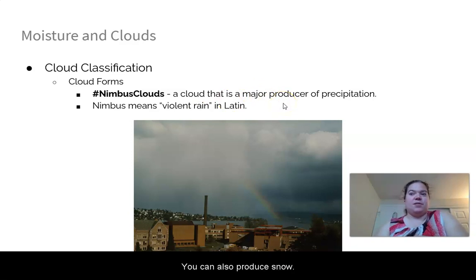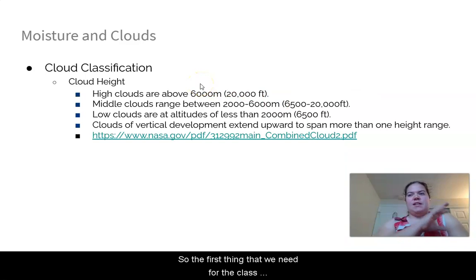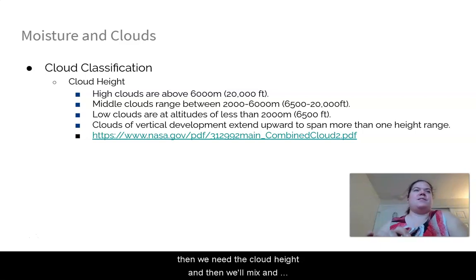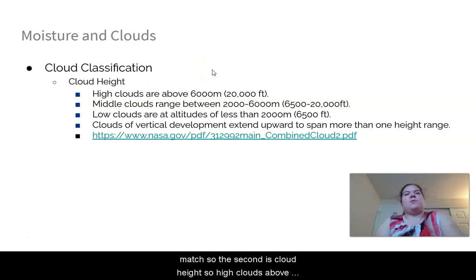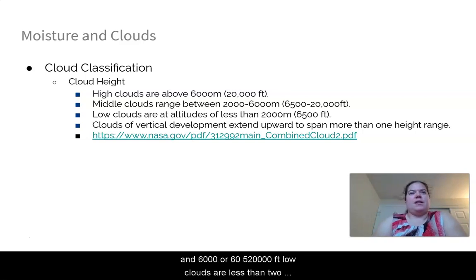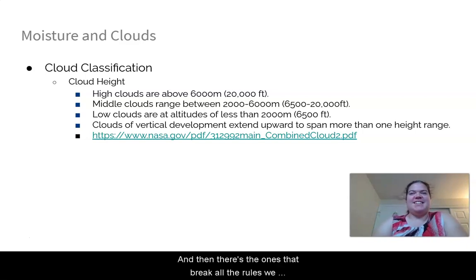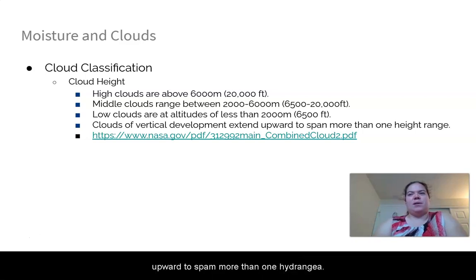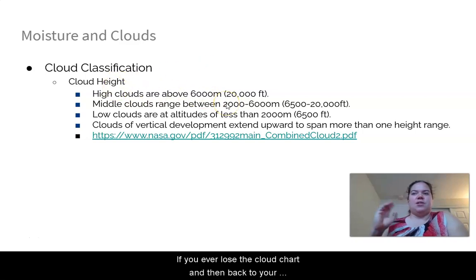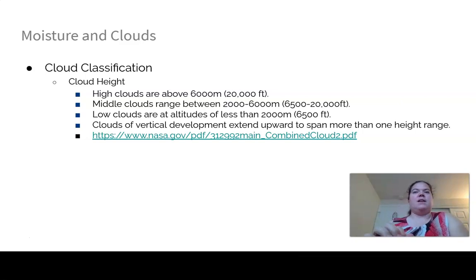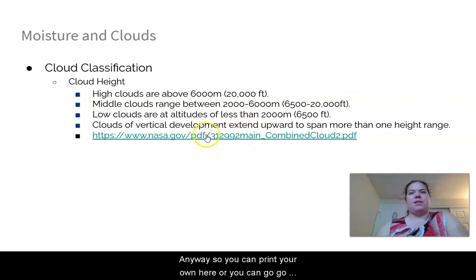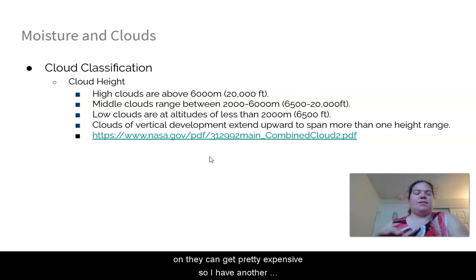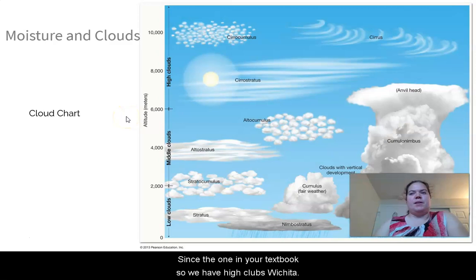Cloud classification also uses height. High clouds are above 6,000 meters (20,000 feet). Middle clouds range between 2,000 and 6,000 meters (6,500–20,000 feet). Low clouds are below 2,000 meters (6,500 feet). Then there are clouds of vertical development that break the rules — extending upward to span more than one height range. There's a cloud chart in the back of your textbook, or you can print or Google one.